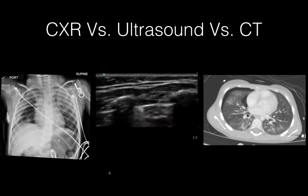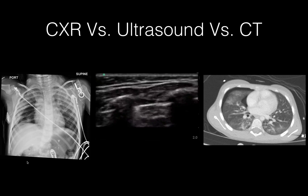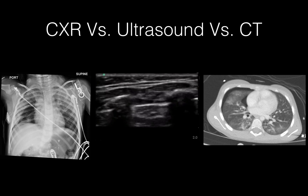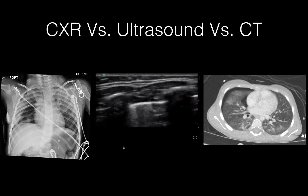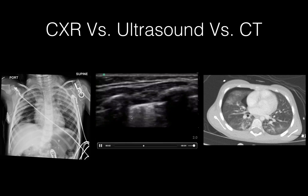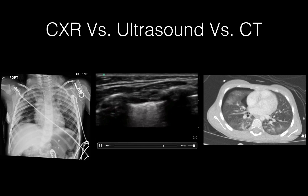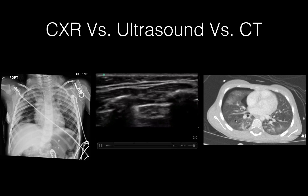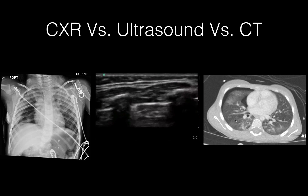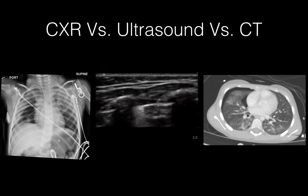This is comparing imaging in the same patient. On x-ray you can actually see it up here, and of course you see it very quickly and easily on ultrasound. Then on CT, which is the best imaging modality, you of course see the pneumothorax — but you can't always get the CT done.